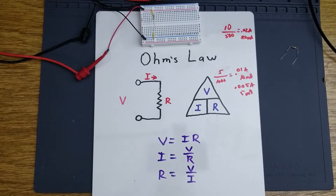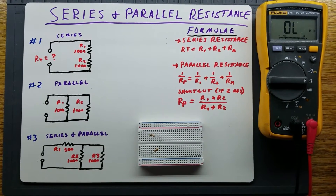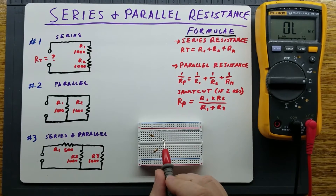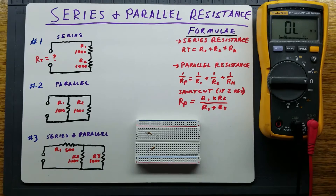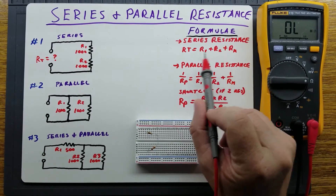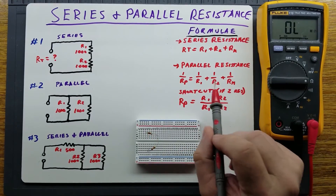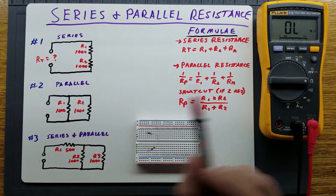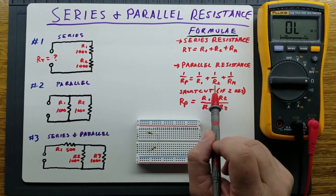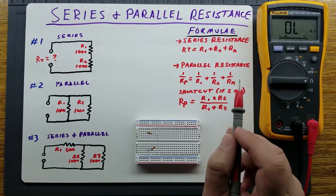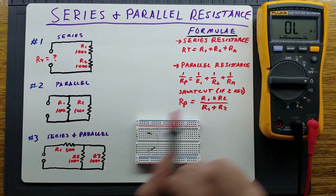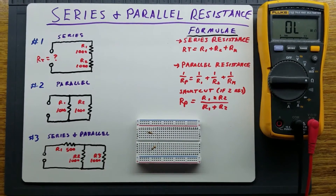That was a quick demonstration of basic Ohm's Law. Lastly, a little bit about series and parallel resistance. Although technically not part of Ohm's Law, it's important to know how different combinations of resistors affect the total resistance of a circuit. For series resistance, the total resistance is simply equal to the sum of the resistors in series. For parallel resistance, 1 over Rp is equal to 1 over R1 plus 1 over R2 plus 1 over R, however many other resistors you have.